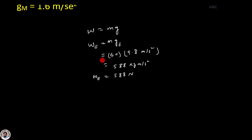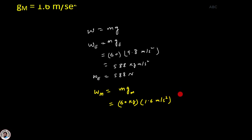اب میں find out کرتا ہوں weight of girl on the surface of Moon۔ اس کے لئے equation لکھتا ہوں: W_m = m × g_m یعنی gravitational acceleration on the surface of Moon۔ یہاں پہ values put کرتا ہوں: mass of girl 60 kg ہے اور Moon پہ gravitational acceleration کی value 1.6 m/s² ہے۔ multiply کرنے سے ہمیں ملتا ہے 96 kg·m/s² یعنی 96 Newtons۔ تو weight of girl on the surface of Moon = 96 N۔